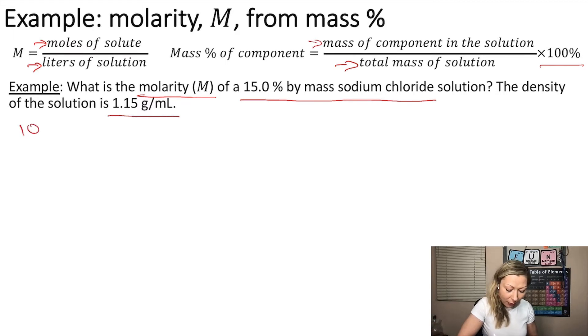This means that if you have 100 grams of solution, out of that 100 grams, 15.0 grams is going to be sodium chloride, and the rest is going to be the solvent.